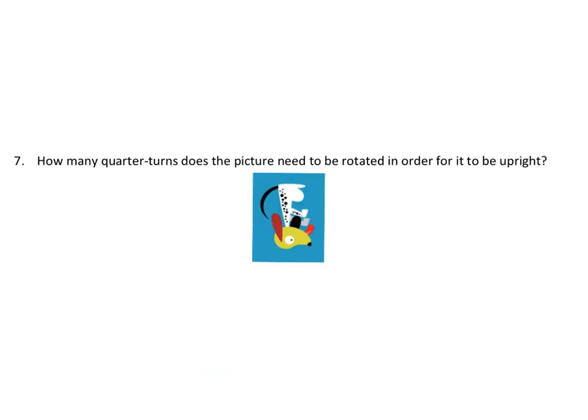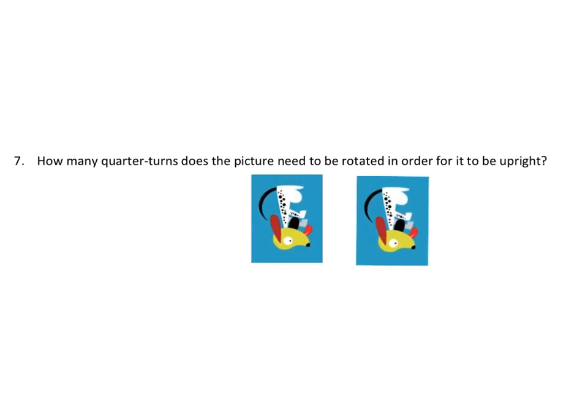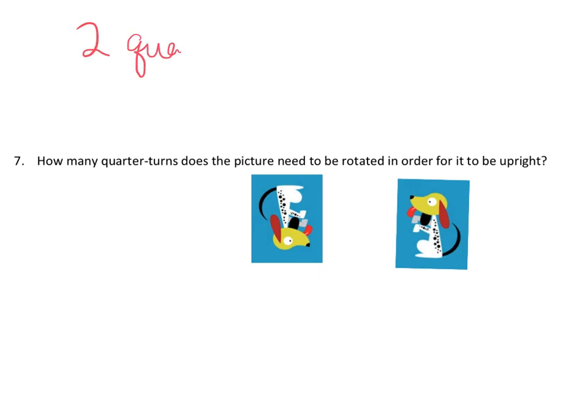So this is a kind of a cool one. It says, how many quarter turns does the picture need to be rotated in order for it to be upright? So you can see our poor little dog is upside down. And if we want to rotate it upright, so we just want it to be like normal picture upright. So how many quarter turns? Well, let's do one quarter turn. One quarter turn to the right. Now let's do another quarter turn. Two quarter turns to the right. And there it is. So one answer would be, well, we could do two quarter turns to the right.